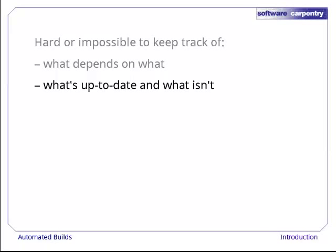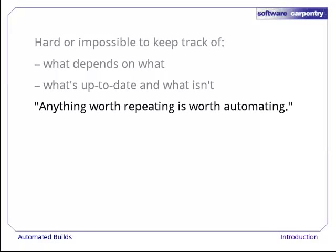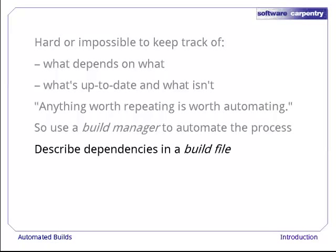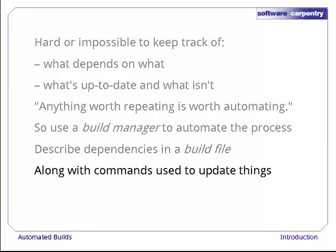This is where tools like Make come in. One of the fundamental rules of computing is that anything worth repeating is worth automating. If we need to do the same tasks over and over again, we should use a build manager to handle the details. We describe dependencies in a build file — usually just a plain text file in some specialized format. We also describe how to update things, i.e. what commands to run when something's dependencies have been satisfied and it's ready to be refreshed itself. The build manager handles everything else — in particular, it keeps track of what's up to date and what's ready to be updated.